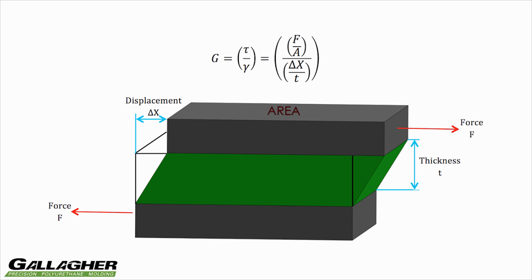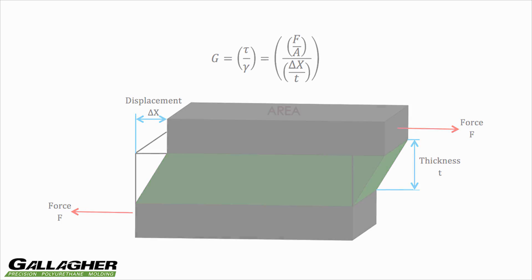Shear stress is the force divided by the cross-sectional area. The shear strain is the displacement divided by the thickness.